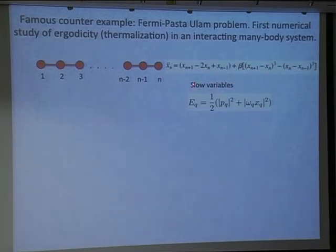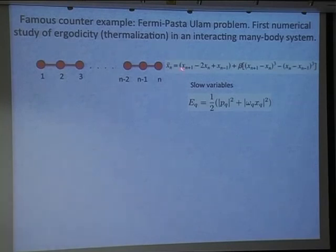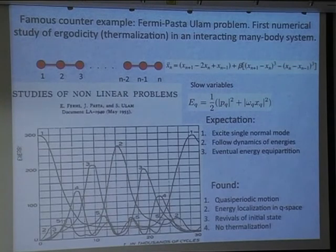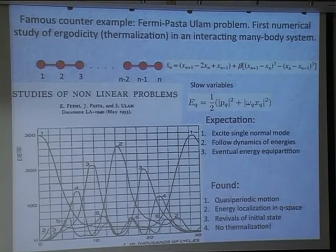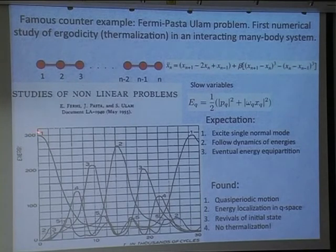To avoid fast oscillations they looked at slow variables — essentially the integrals of motion of the non-interacting system. What they expected was that starting from a state where only one mode is occupied (an interaction quench, in modern language), the energy would spread to all other modes. They did see energy leaving the first mode and going into other modes at first.